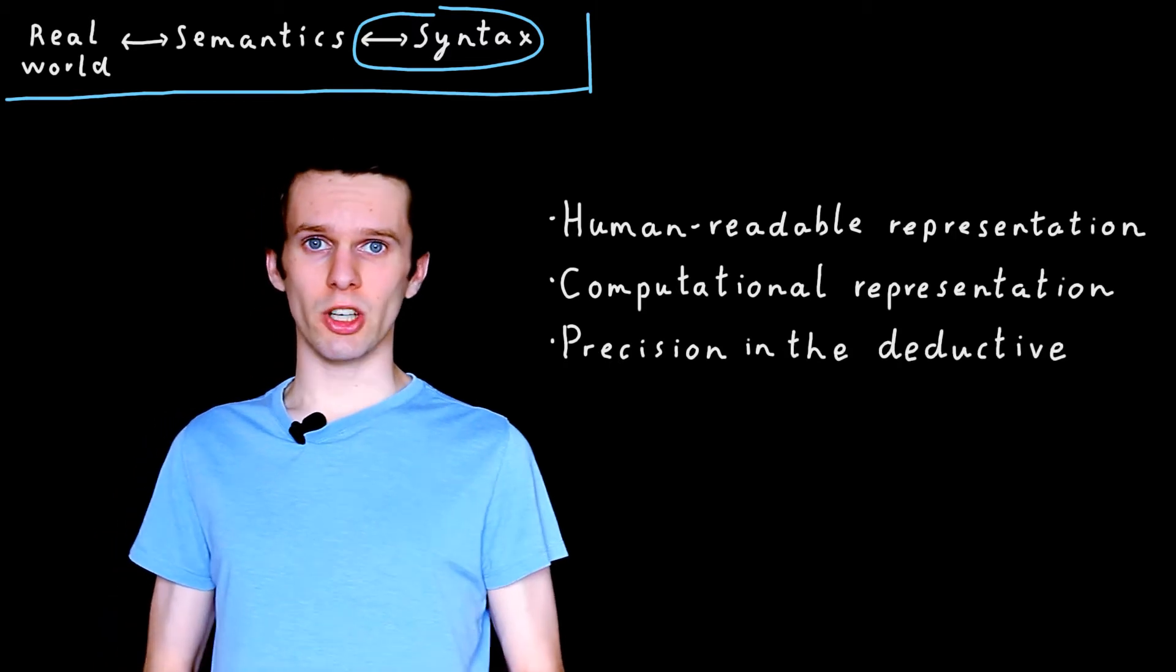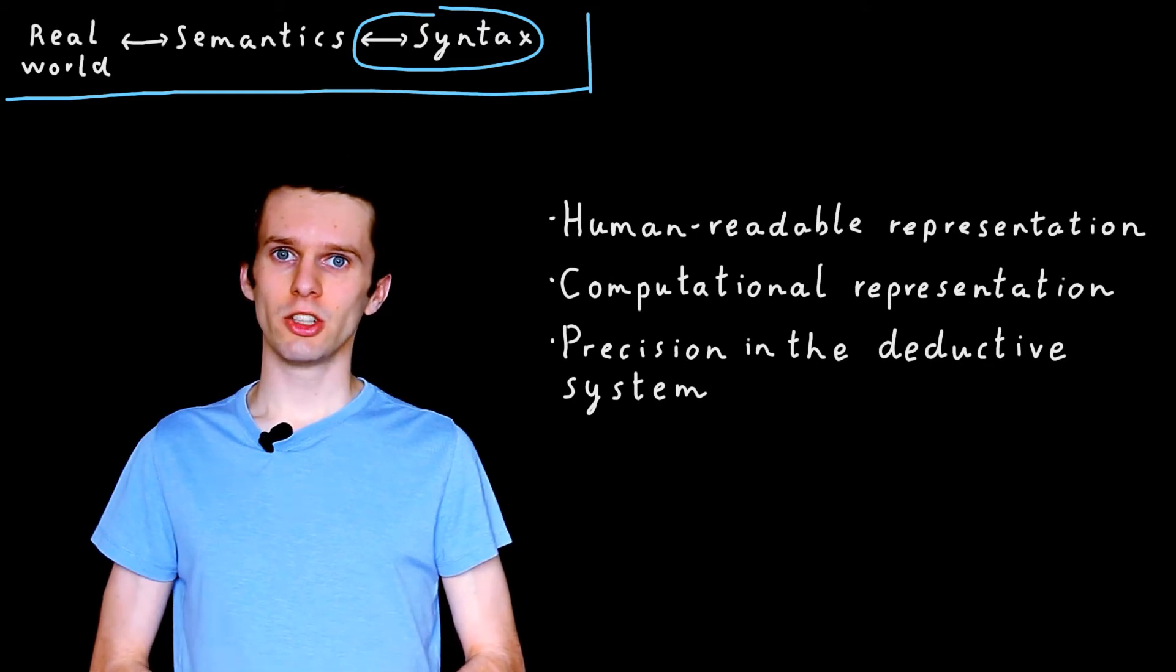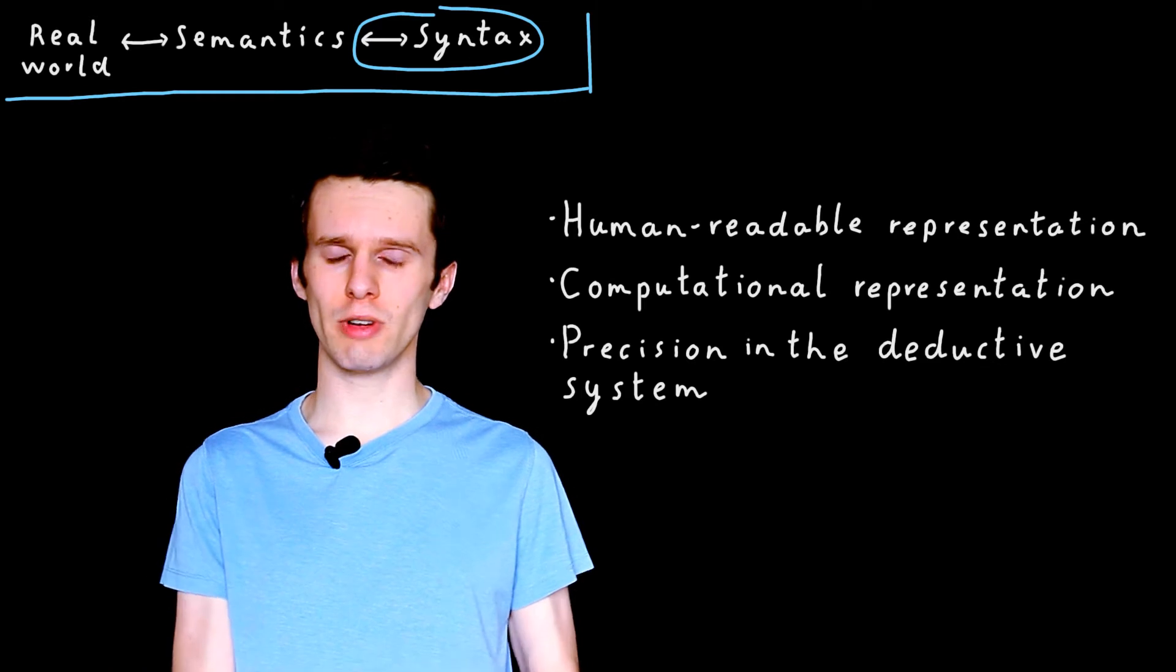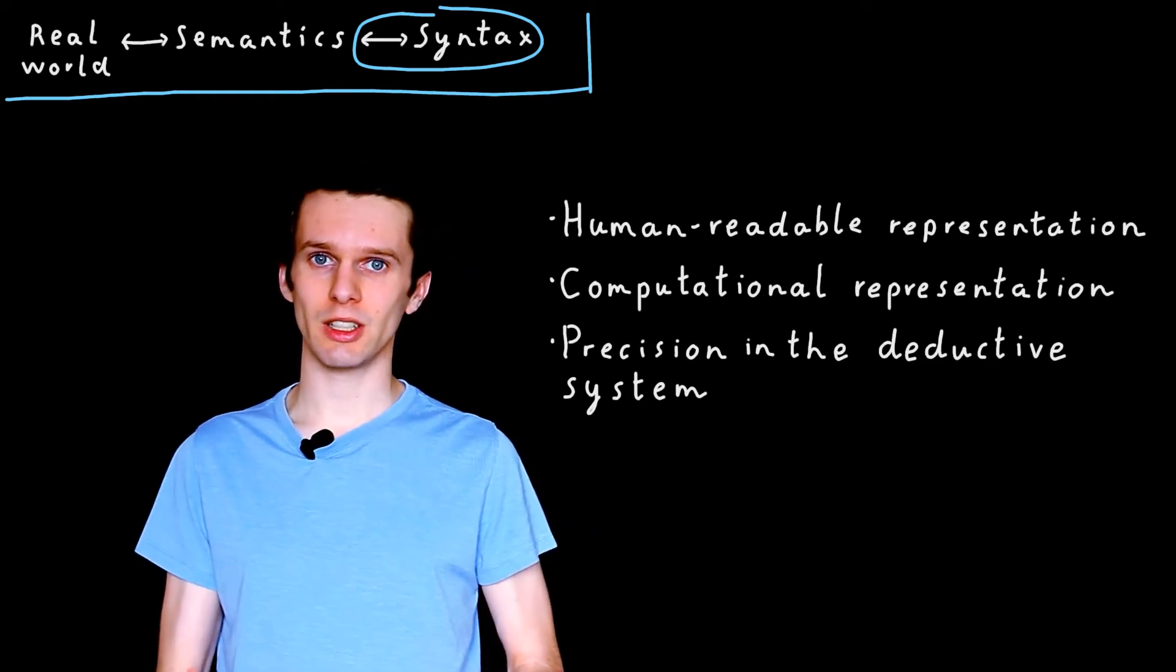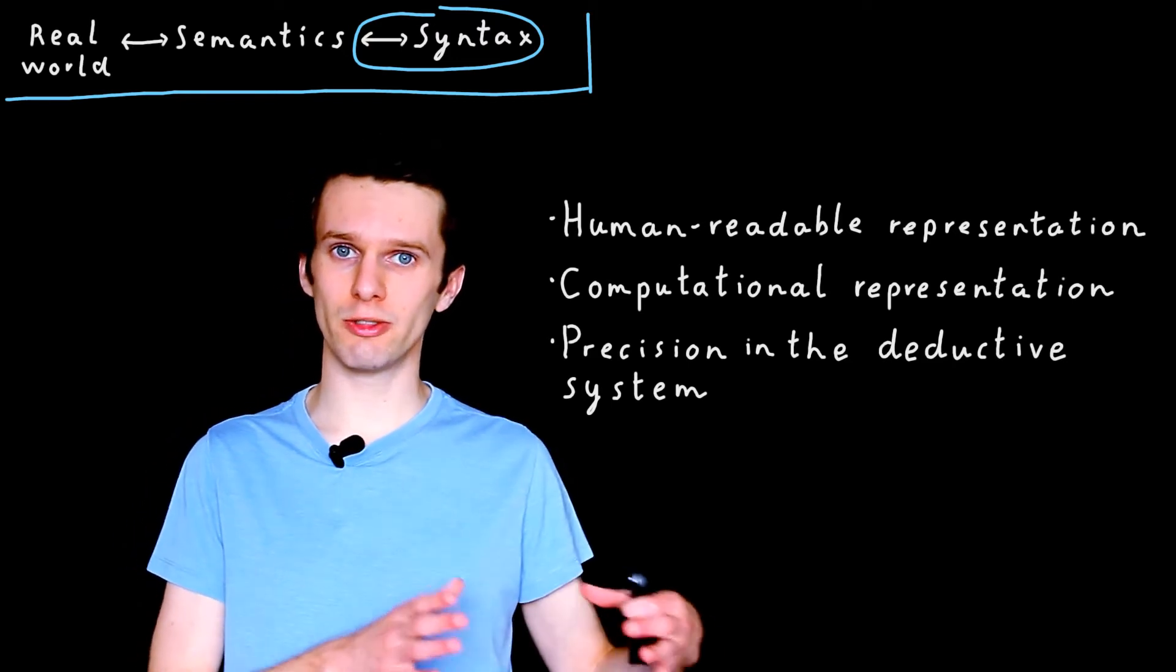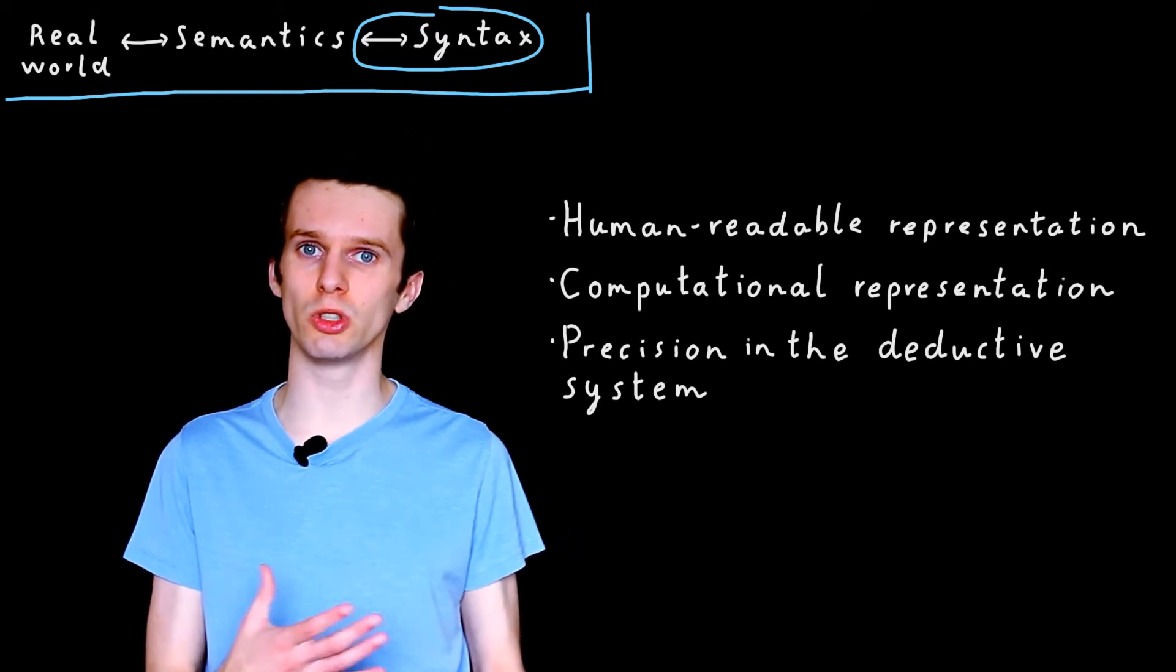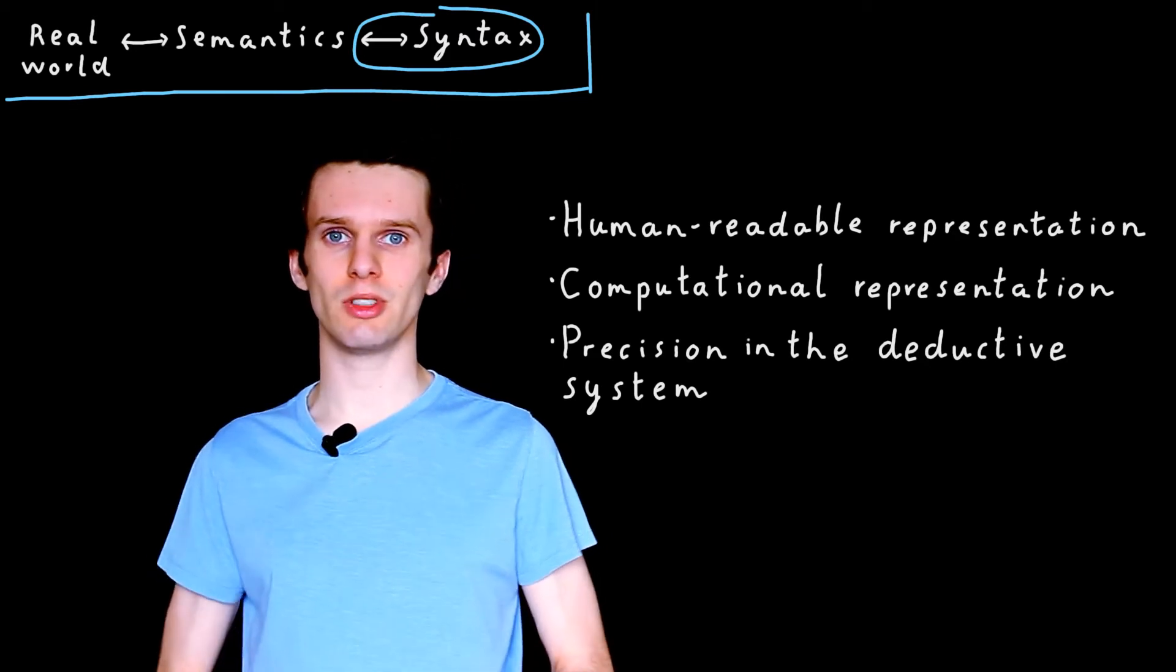It also gives us some precision. So it's very important in many logics to be absolutely sure that what we're saying is correct. And thoroughly and rigorously defining a syntax means that we have that precision when it comes to defining our deductive system, which is the primary mechanism we will use for reasoning about the real world. And we'll see more of that in the next video.